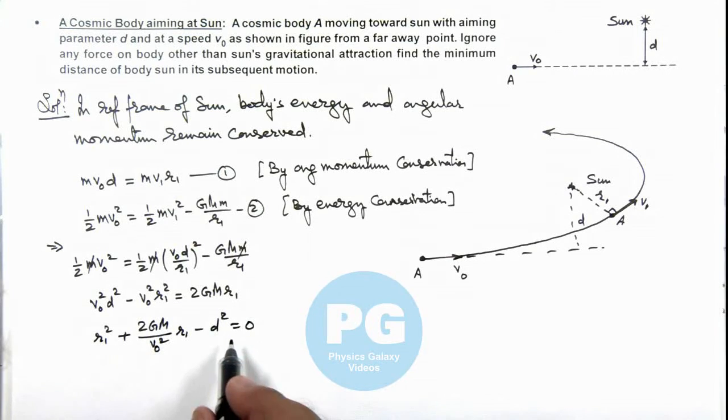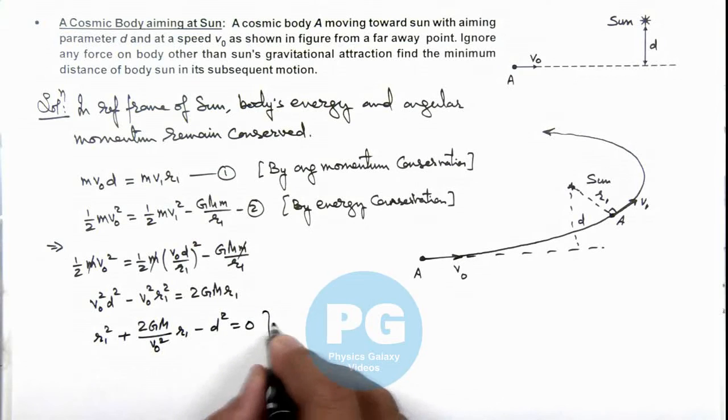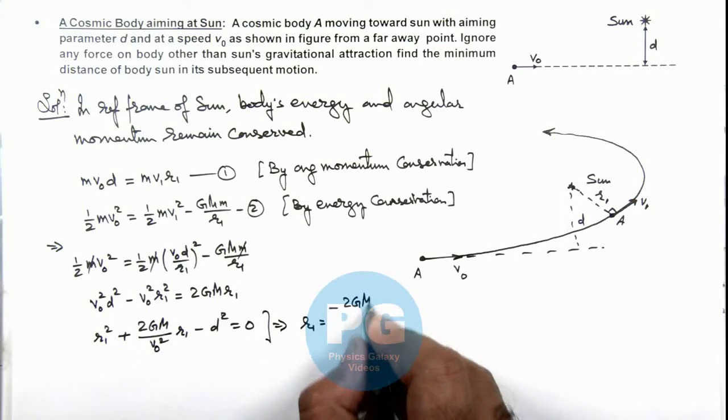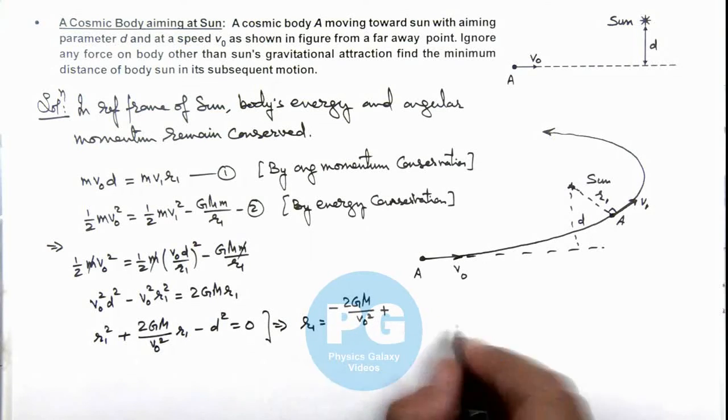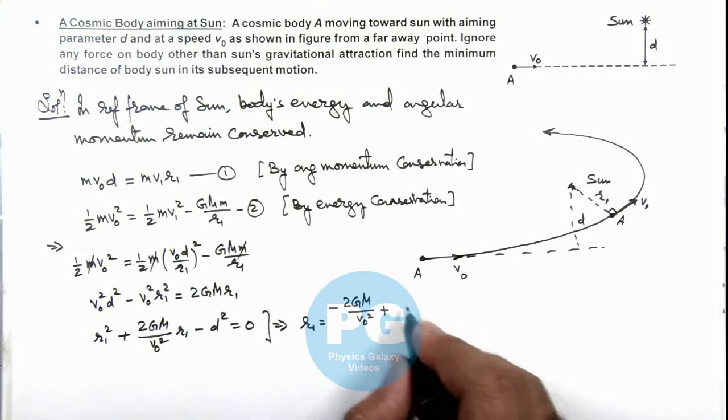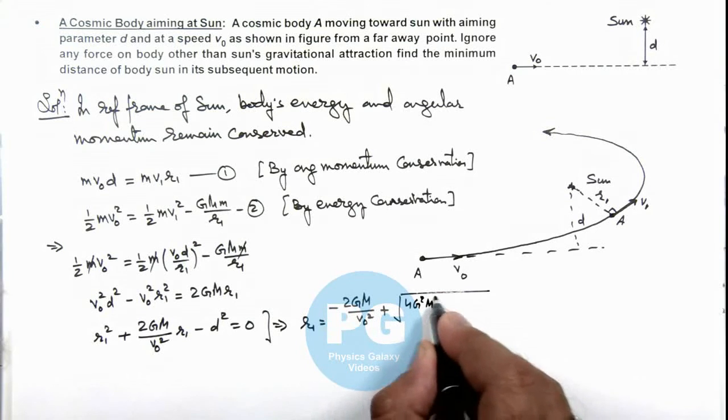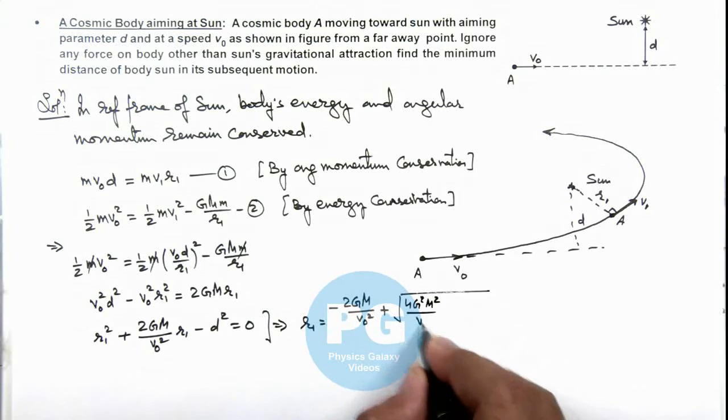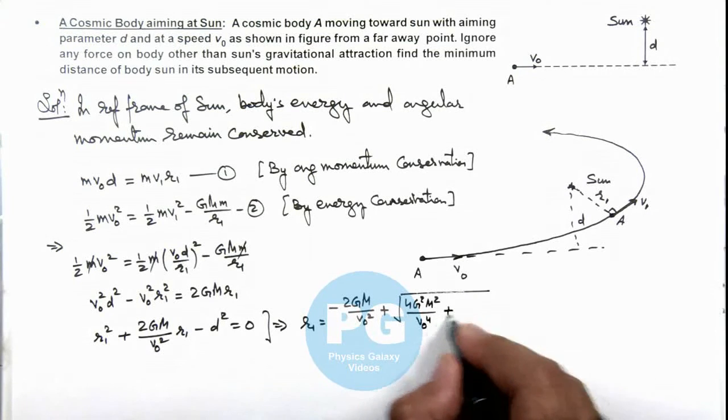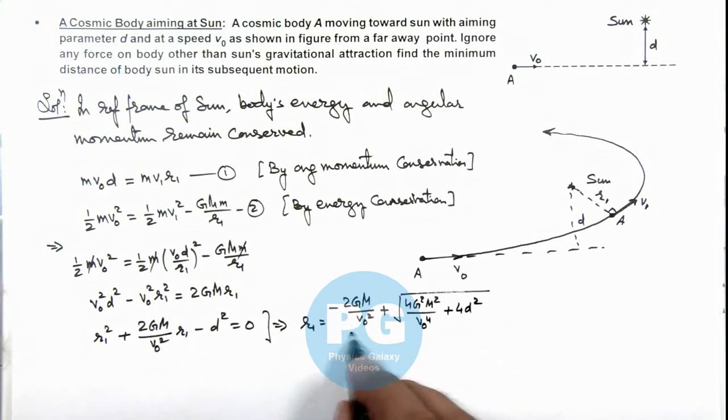Now simplifying this quadratic we are getting its result as r1 is equal to minus b which is minus 2 G M by v not square plus, discarding the negative sign in the result, the roots of r1 because r1 can never be negative. This is root of b square which is 4 G square M square by v not to power 4 minus 4 a c can be written as plus 4 d square, divided by 2.